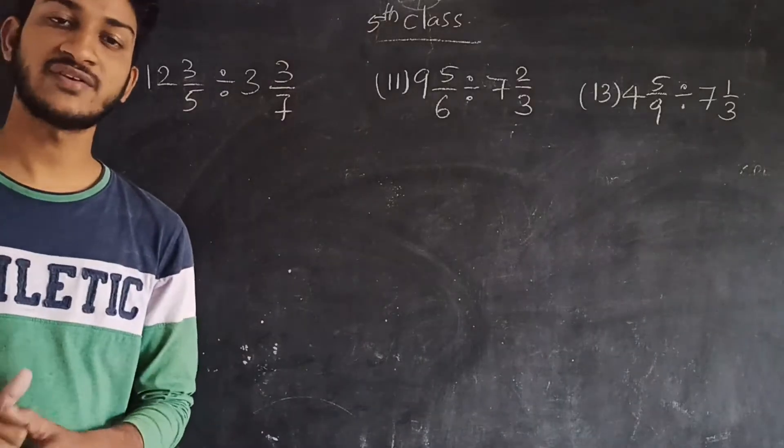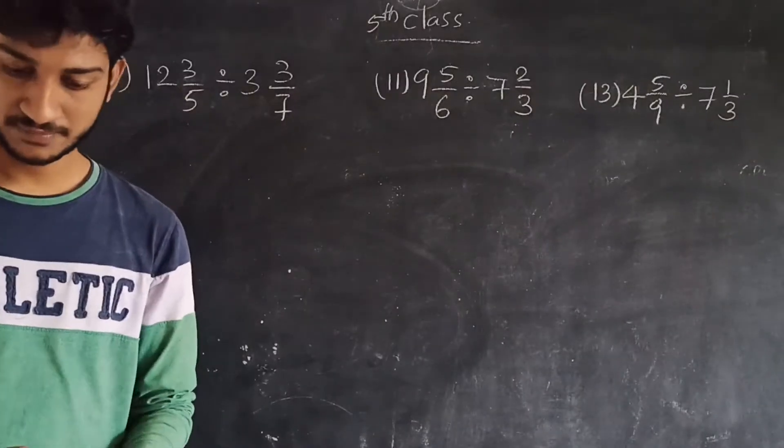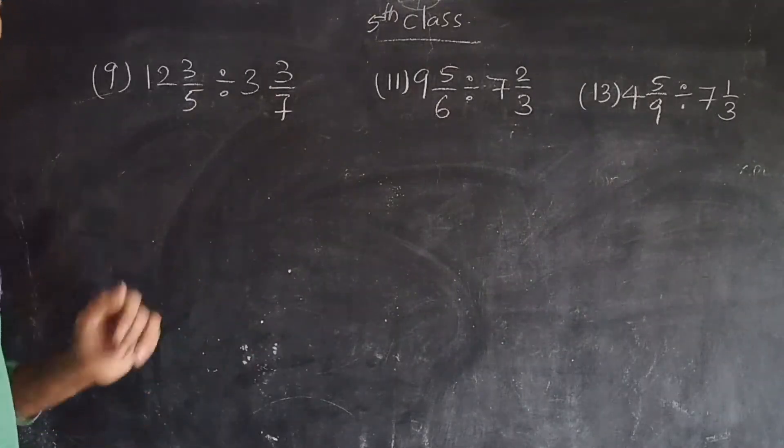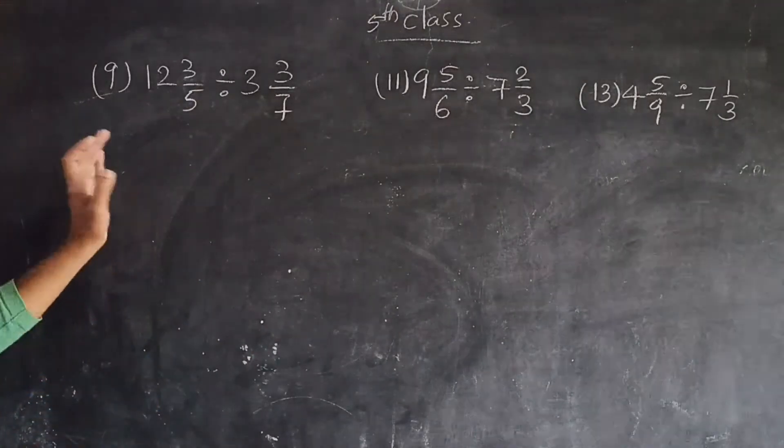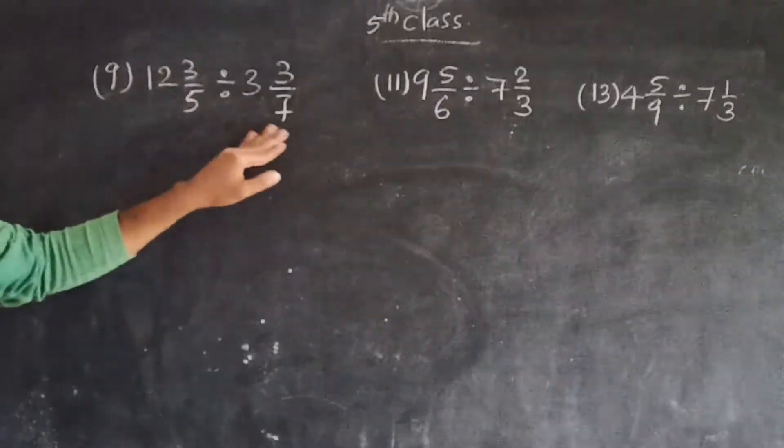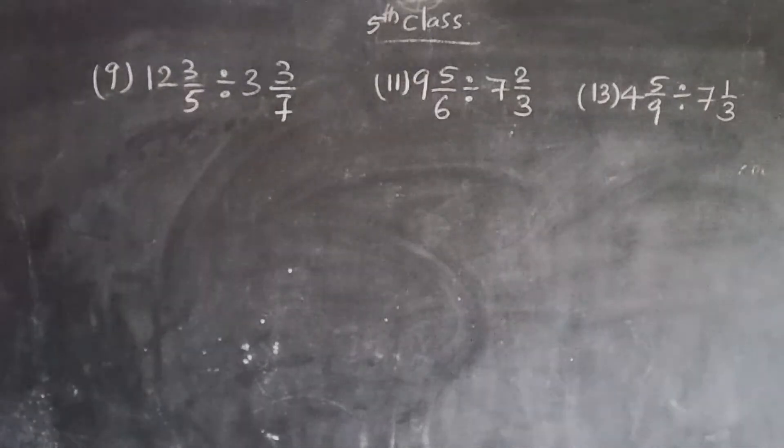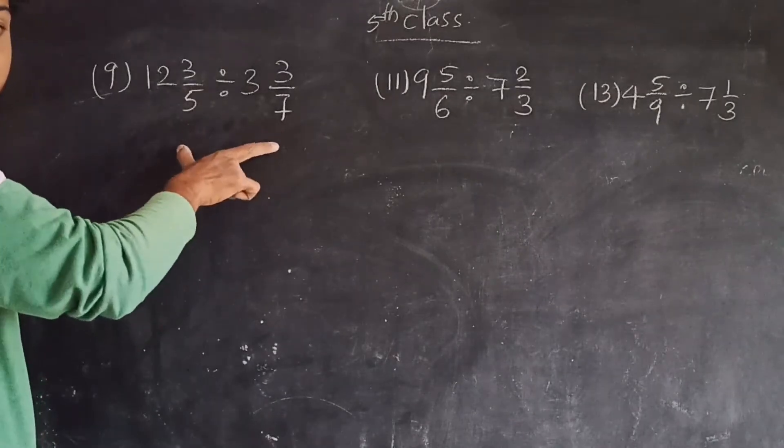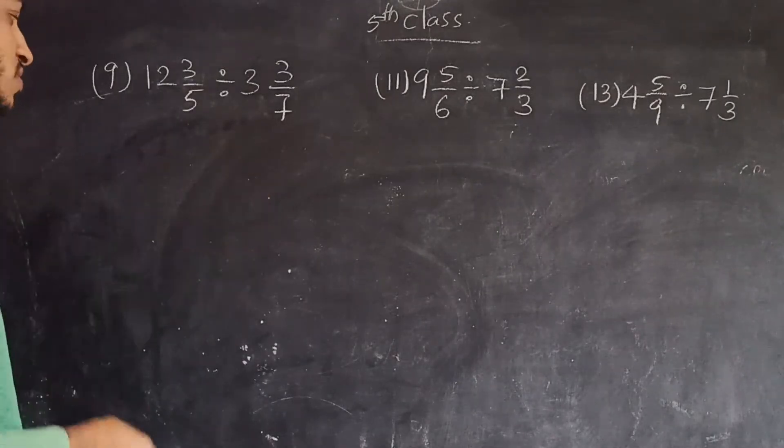Hi children, good morning everyone. Let's start our class. Okay, see page number 1 by 1 and do the following. Law 9th problem children: 12 3/5 divided by 3 3/7. So first you do, you want to convert mixed fractions into improper fractions.